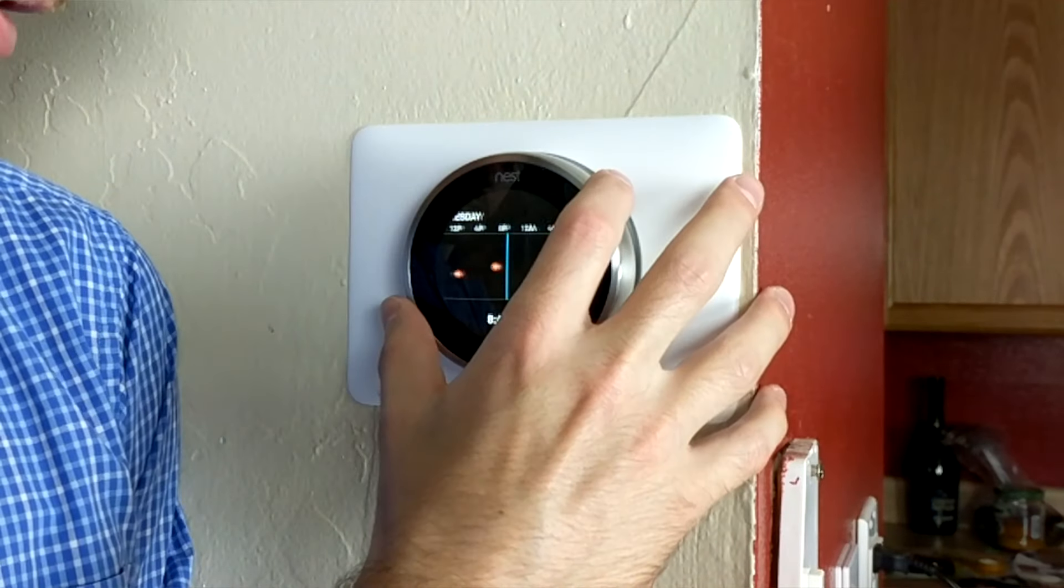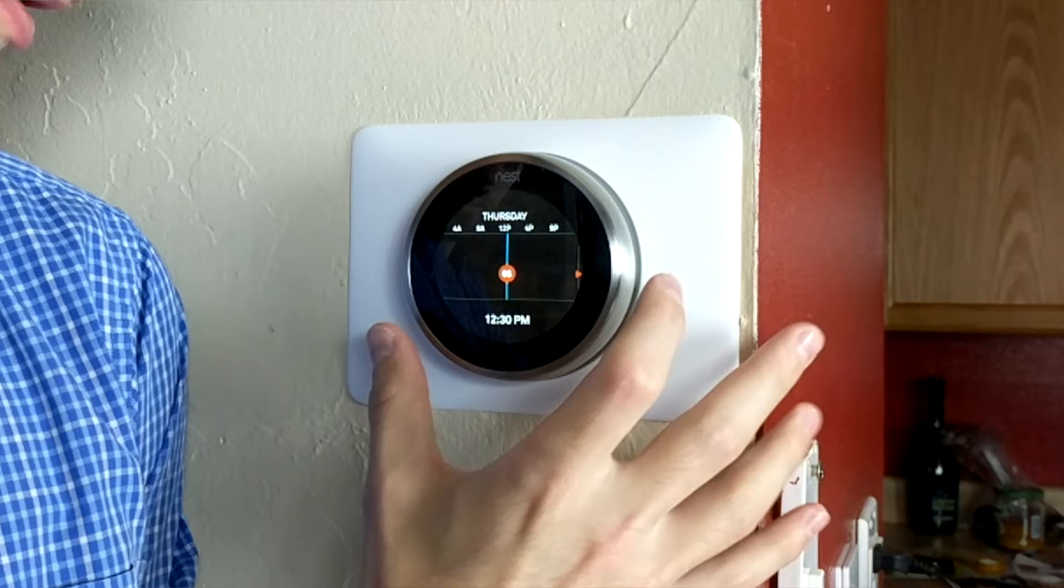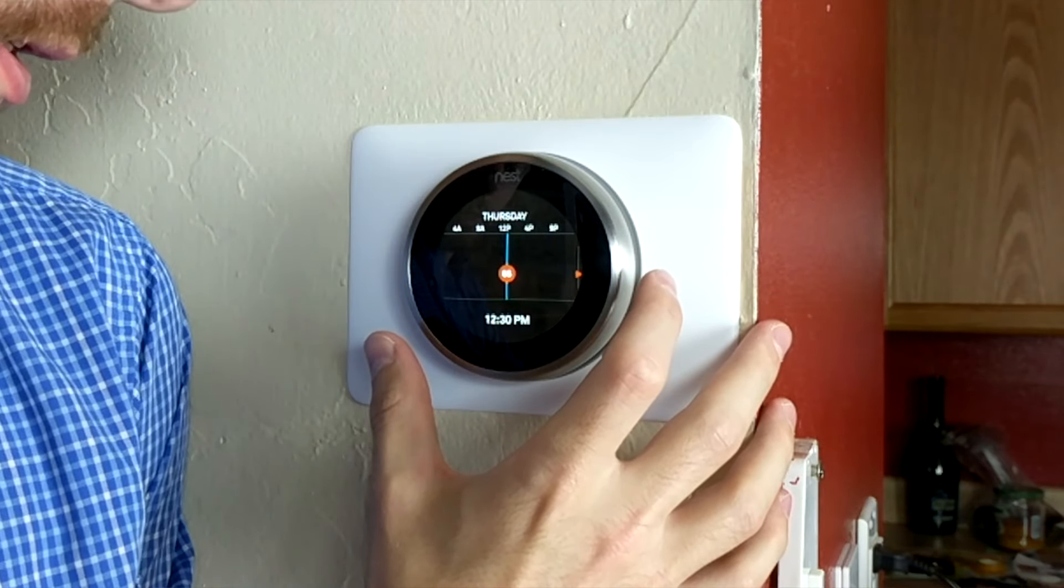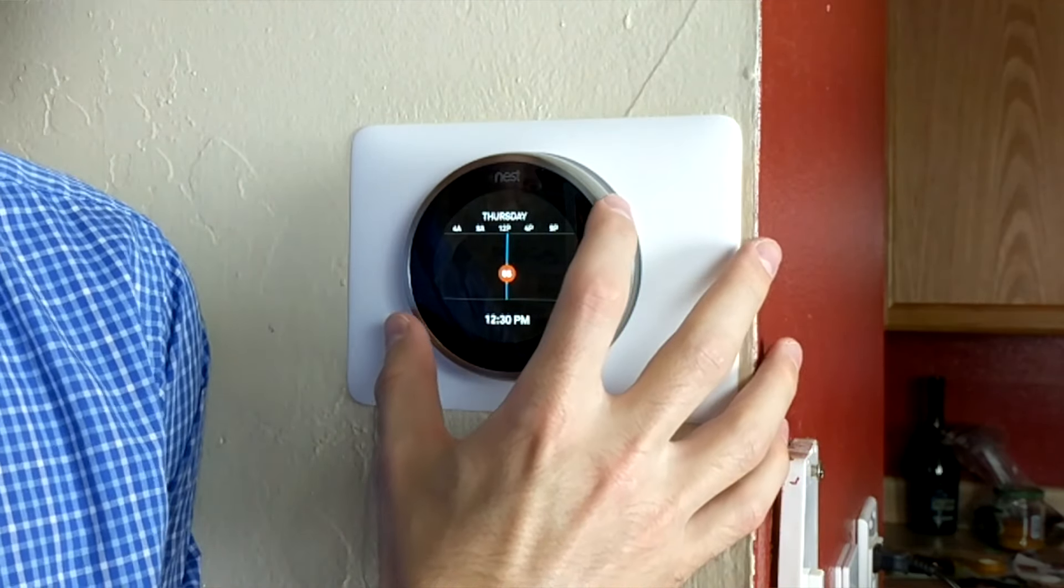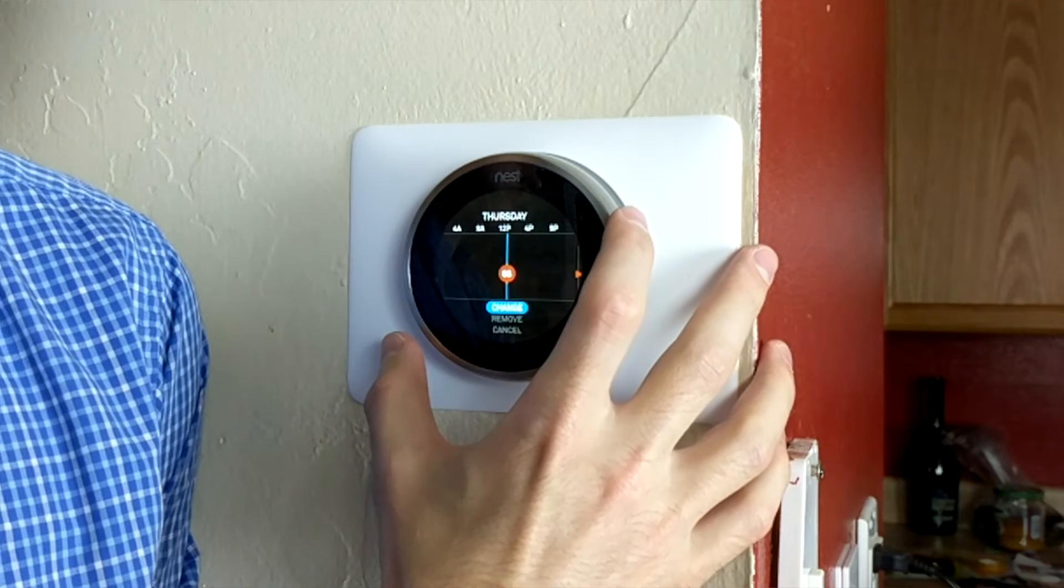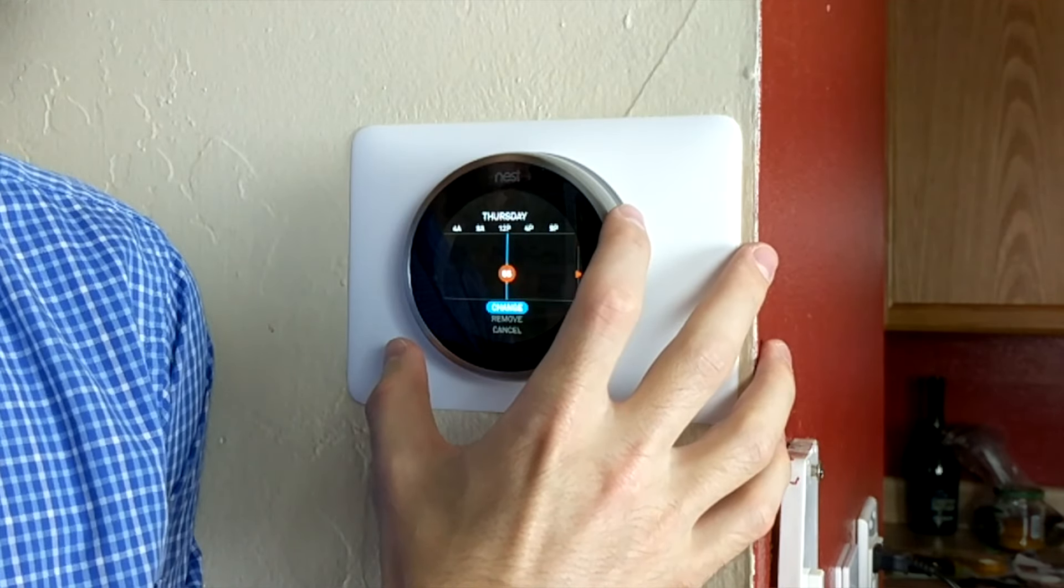To change a scheduled temperature change, scroll around to that already scheduled event. We have one set on 65 degrees at 12:30 pm on Thursday. Then press in. You'll then be given the option to either change or delete the scheduled event.